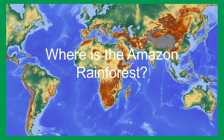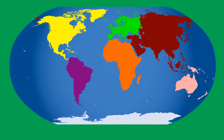So where is the Amazon rainforest? The Amazon rainforest can be found here in South America. South America is a continent. A continent is a large area of land consisting of a number of countries.